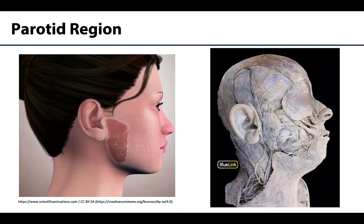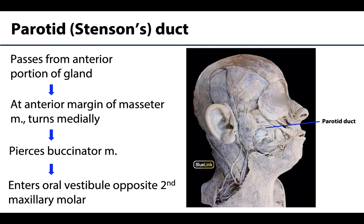Let's quickly review the general area of the parotid gland. It is located in the parotid fossa, which is anterior to the ear but not quite in the cheek region. Make sure to review the parotid fossa video to review those more exact boundaries. Since the parotid gland is located comparatively far away from the oral cavity, it has to have a relatively long duct, referred to as the parotid duct — or more commonly in the clinic as Stenson's duct.